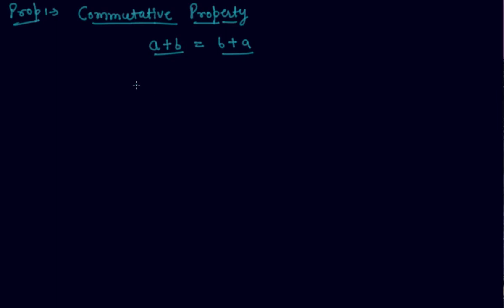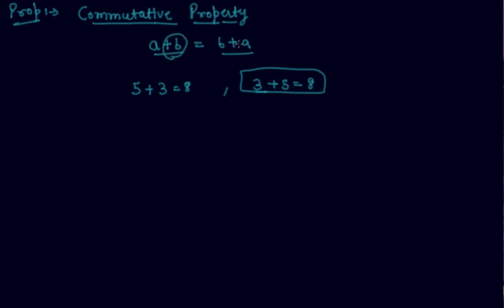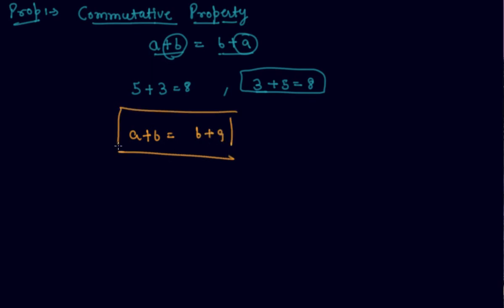Let me give you one example. If I add 3 to 5 I will get 8, and if I add 5 to 3 I also get 8. So there is no difference whether you add b to a or a to b. This property states that a plus b will always equal b plus a. This is the commutative property.